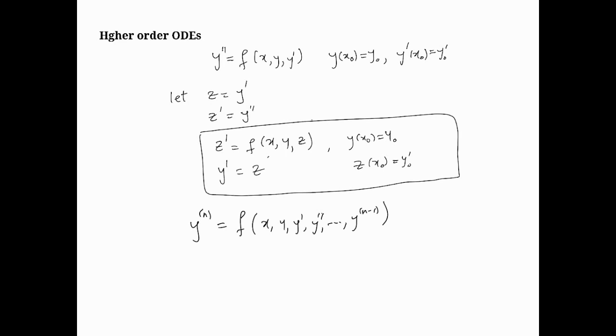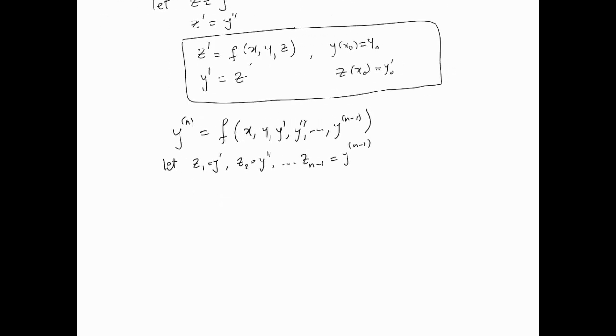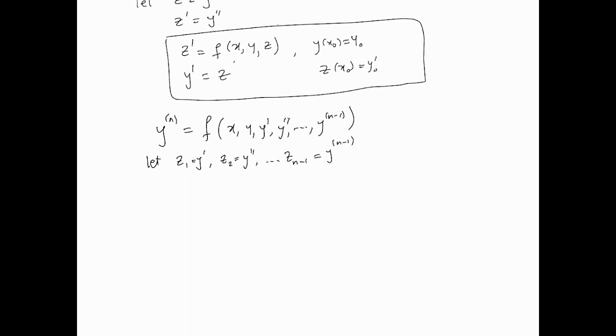The recipe is as follows: we introduce new variables. Let z1 equals y prime, z2 equals y double prime, and continue up to z(n-1) which equals the n minus 1th derivative of y.